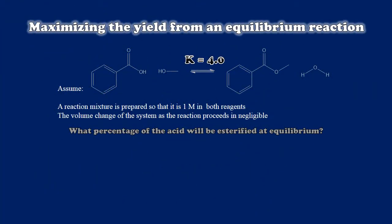We're going to answer this question about how we can maximize our yields from equilibria using a fairly simple Fischer esterification reaction. This is the reaction of benzoic acid with methanol, under acidic conditions, to create methyl benzoate and water. The equilibrium constant for this reaction is just about four — just like most Fischer esterifications, it's very close to one, meaning it's about a 50-50 equilibrium that doesn't favor one side much more strongly than the other. So if we were to mix one molar solutions of both starting materials and allow equilibrium to establish itself, how much product would we expect to form?